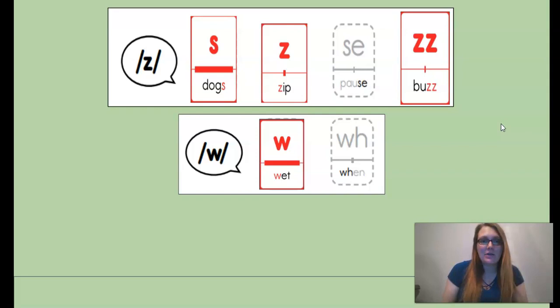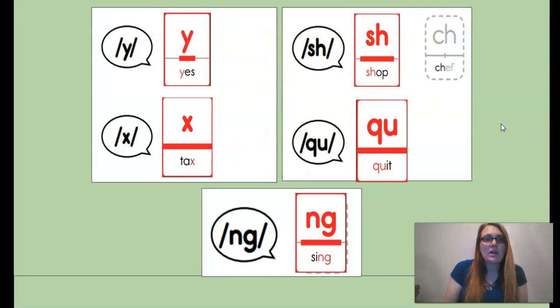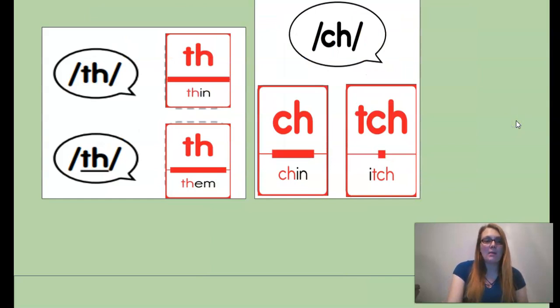Then we have for the Z sound, most of the time it will be an S, sometimes a Z, and sometimes a double Z. For the W sound, it will usually be a W. For the Y sound, we have a Y. X is X, always X. Sh is usually SH. Q is Q all the time. NG, like at the end of SING, is often times NG. Th is a T-H. T-H is also the spelling for V, like in them. Ch is usually C-H, sometimes a T-C-H, like in itch.